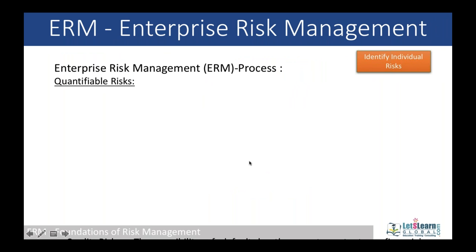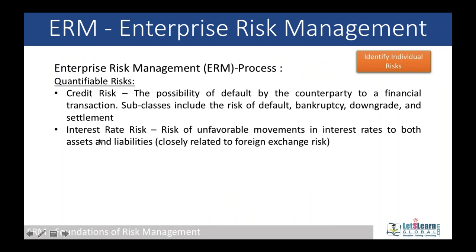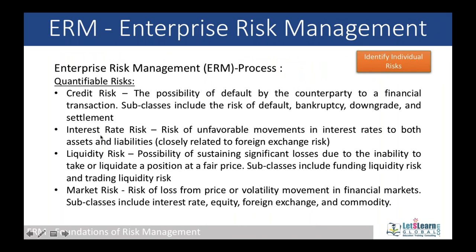Identification of risks: individual risks include quantifiable risks such as credit risk, interest rate risk, liquidity risk, and market risk. For quantifiable risks, we identify the possibility of default by the counterparty — our customer. When you lend money to a customer and they default, that is called credit risk. We need to identify to what extent we can recover when a customer becomes default, what the settlement amount is, and what amount of risk we face due to credit risk.